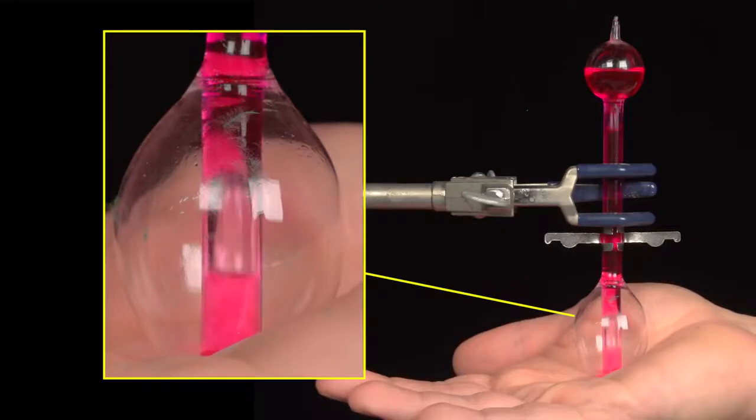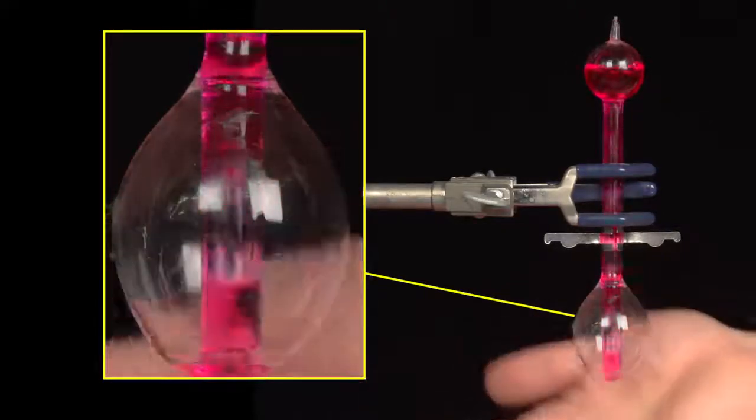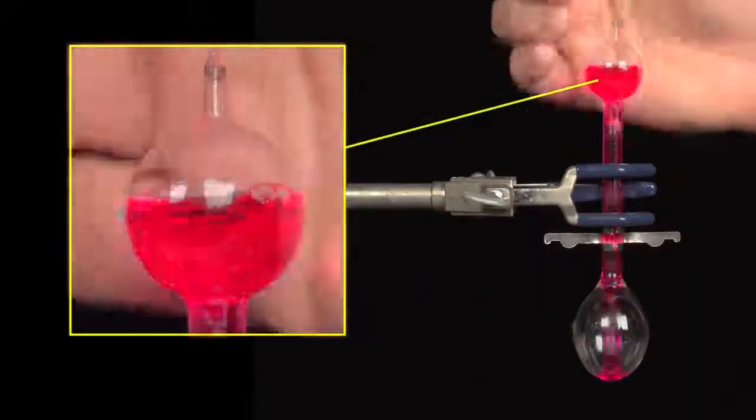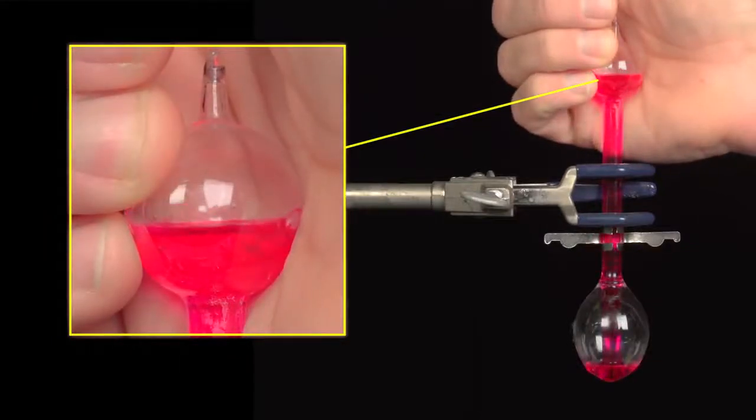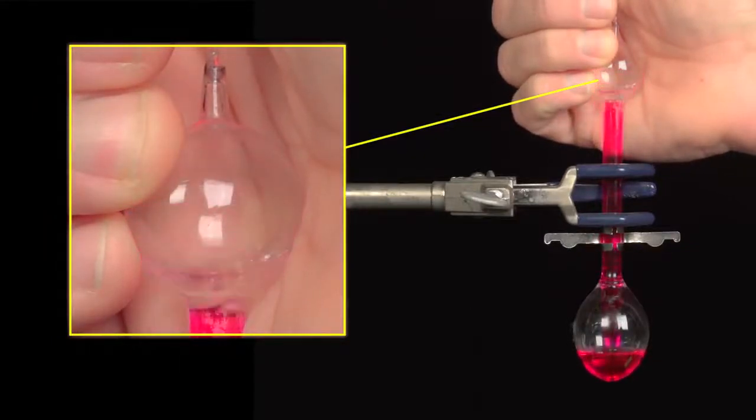Eventually, I heat the vapor so much that it shoots up the stem. Now, watch as I place my hand around the head. Heat from my hand converts liquid to vapor, which increases the pressure and forces the liquid back to the base.